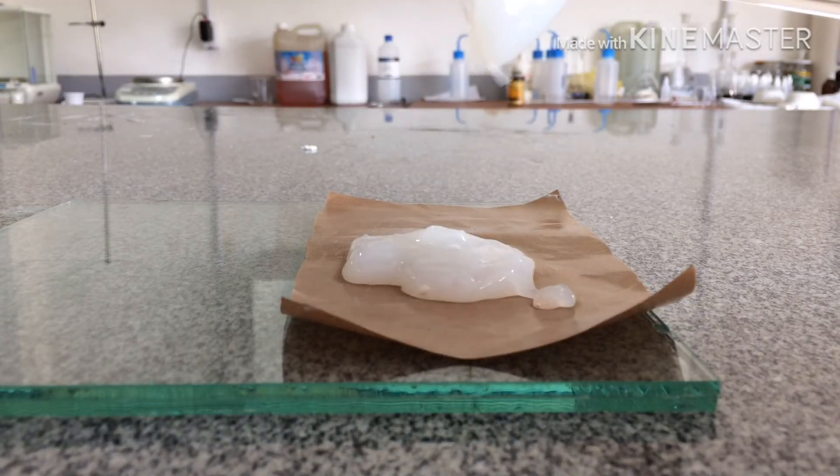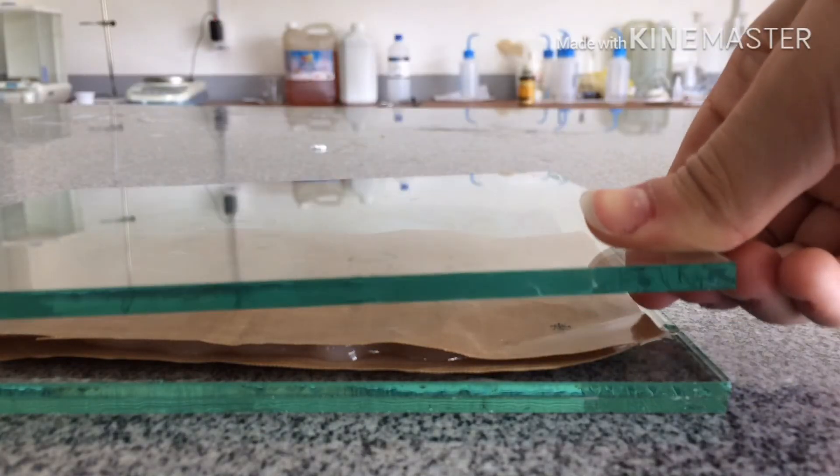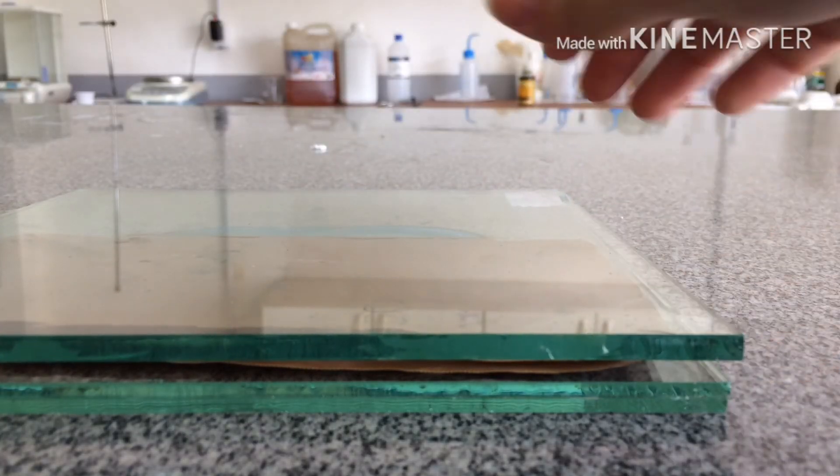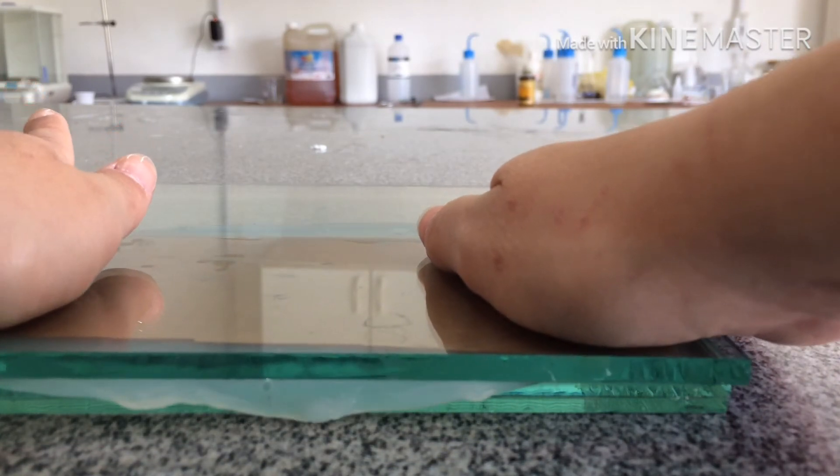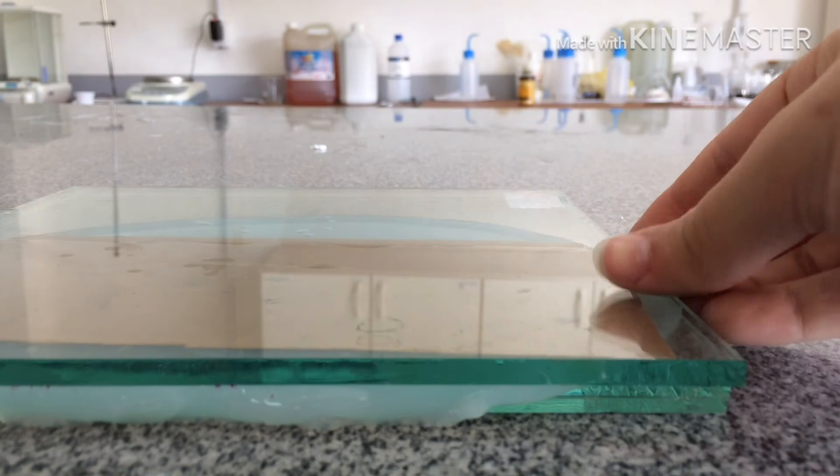Now that it's ready I'll take it to a teflon adhesive film over a square of glass so I can press it and have a plain surface, because the teflon adhesive doesn't stick and the glass does.